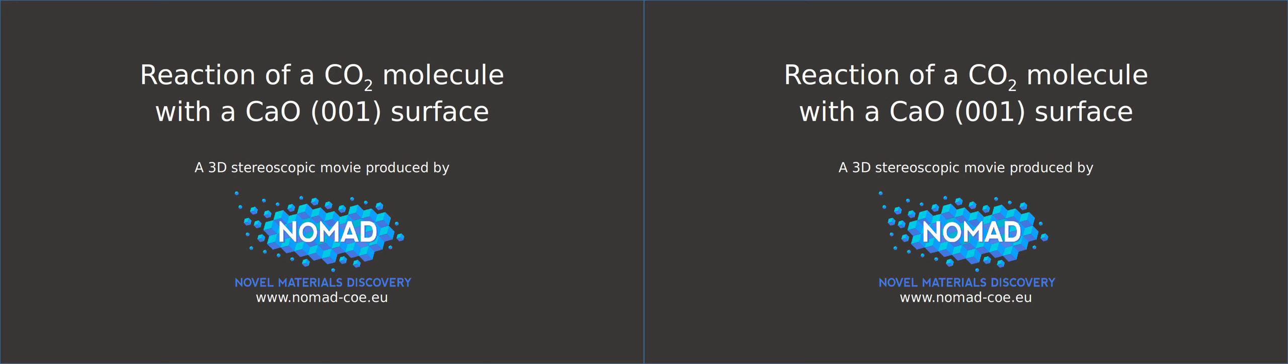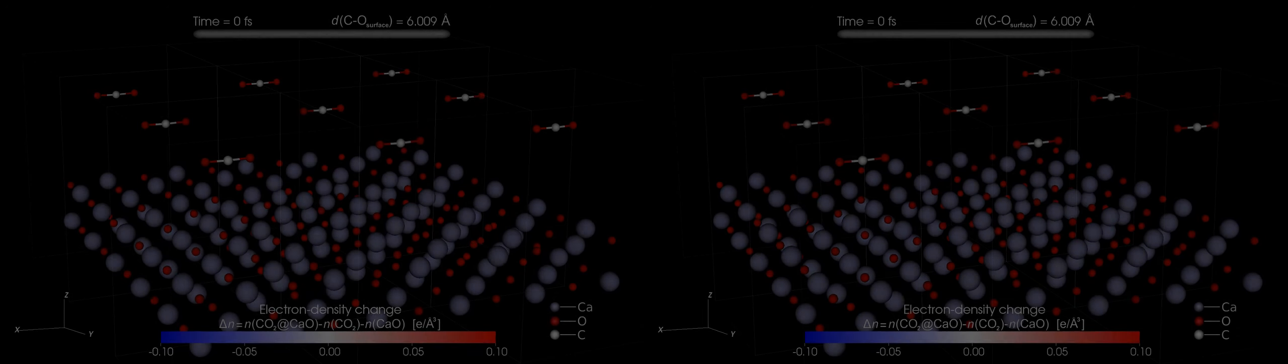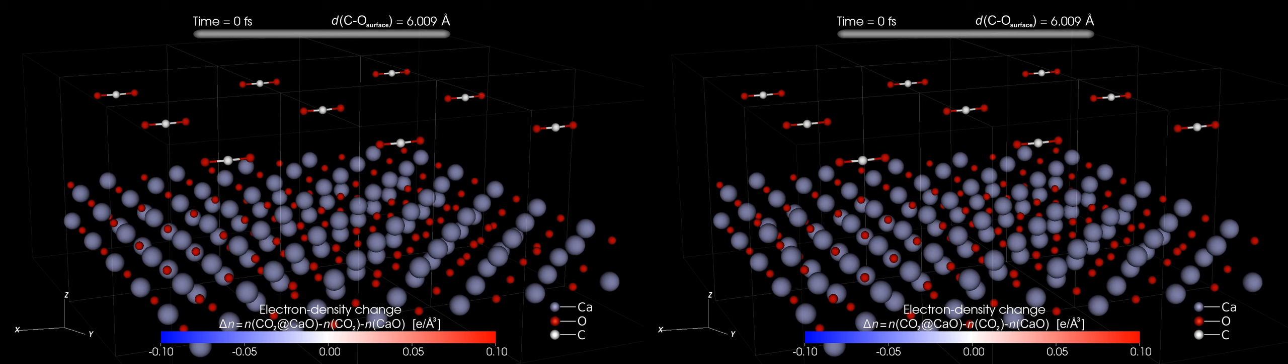The movie is the result of an electronic structure calculation. Calcium atoms in the surface are represented by gray spheres, the oxygen atoms by red spheres. The carbon dioxide or CO2 molecule is shown as a white sphere, the carbon atom, between two red spheres, the oxygen atoms.